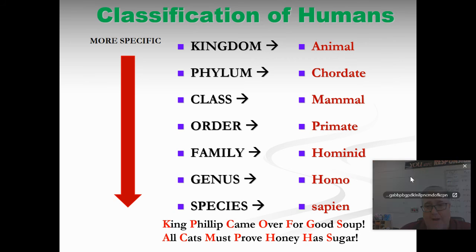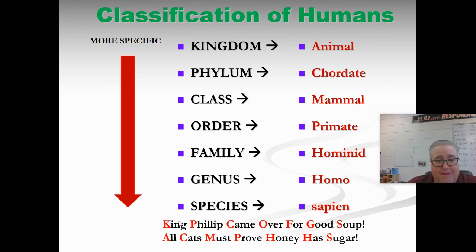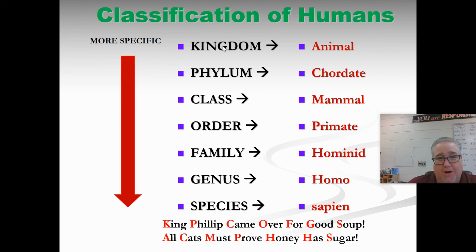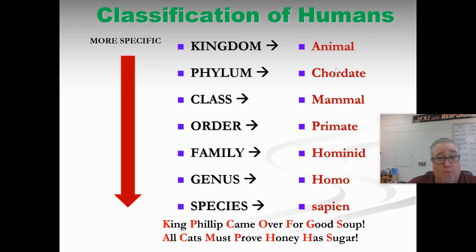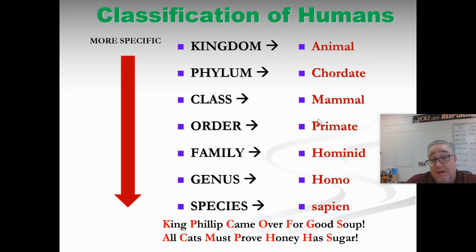Before we get into the individual terms, there are mnemonics to help you remember the order. To remember the levels of classification: 'King Philip came over for good soup.' The first letter of each word represents Kingdom, Phylum, Class, Order, Family, Genus, Species. To remember what group we belong to: 'All cats must prove honey has sugar' — Animal, Chordate, Mammal, Primate, Hominid, Homo, Sapien.